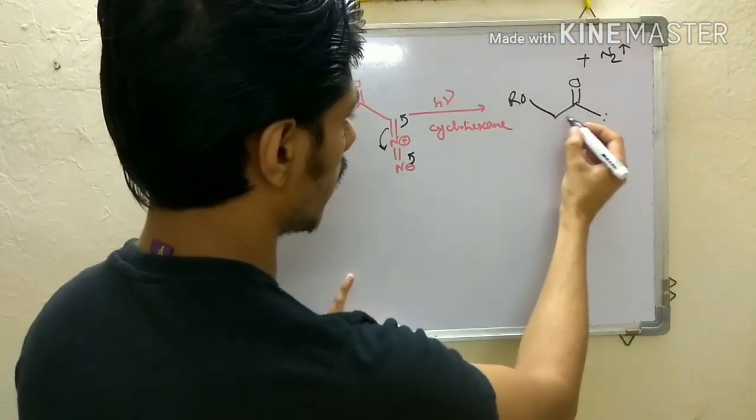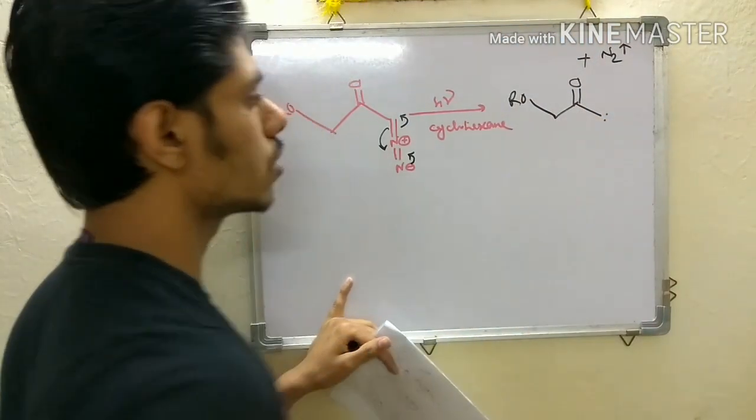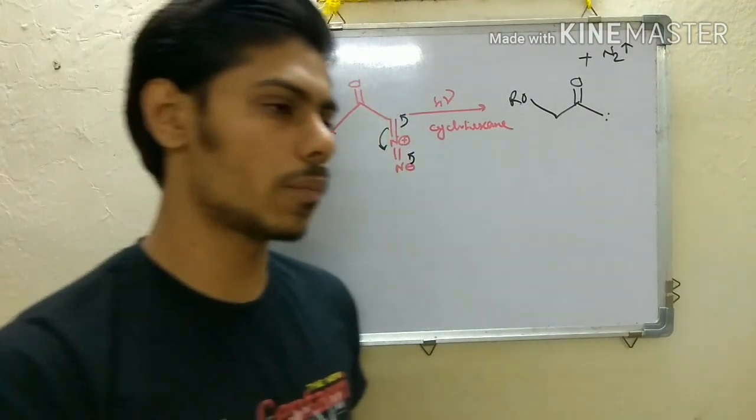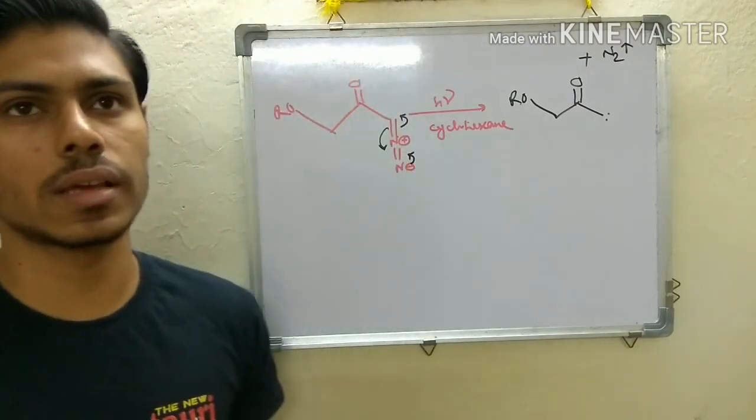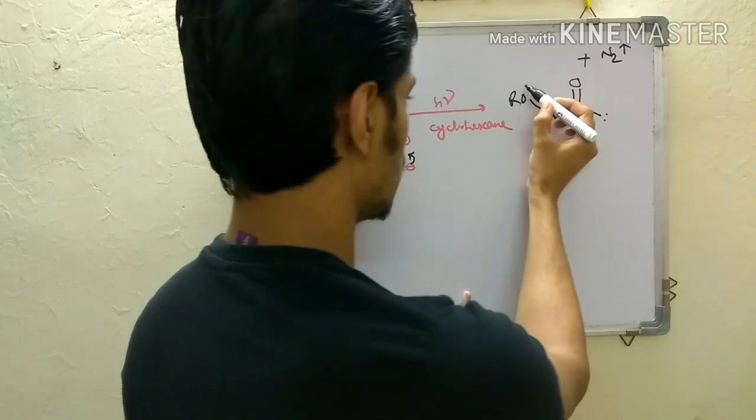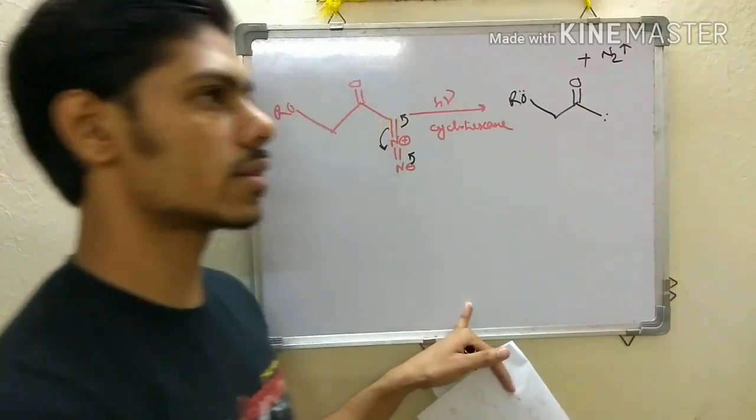Now what can happen? You know alcohol, that is OR group, they have lone pair and thus they have neighboring group participating ability. So this lone pair can act as neighboring group.